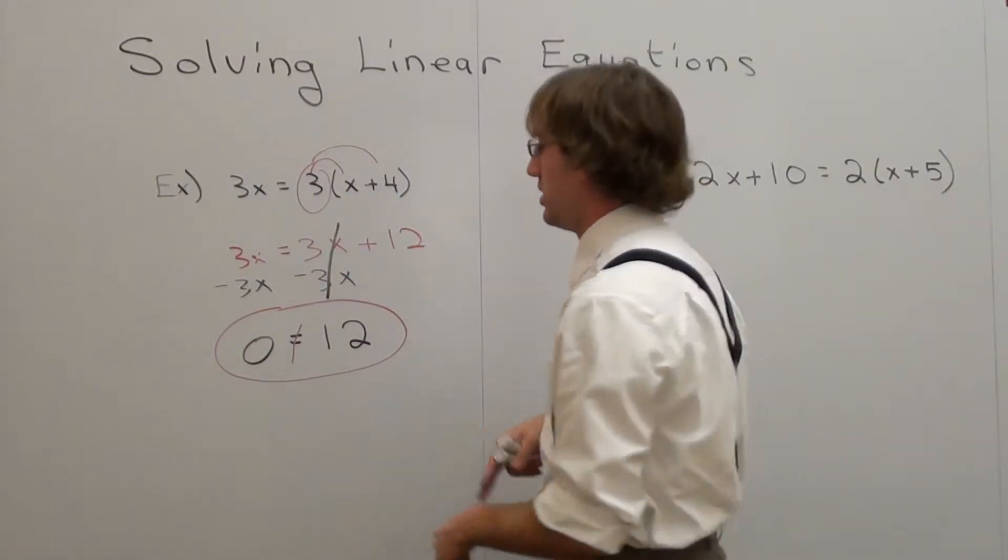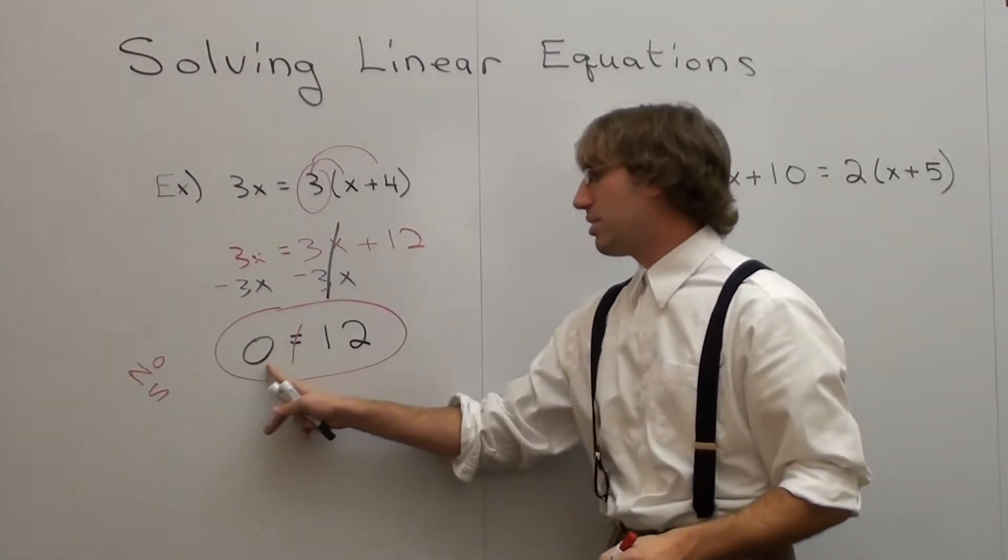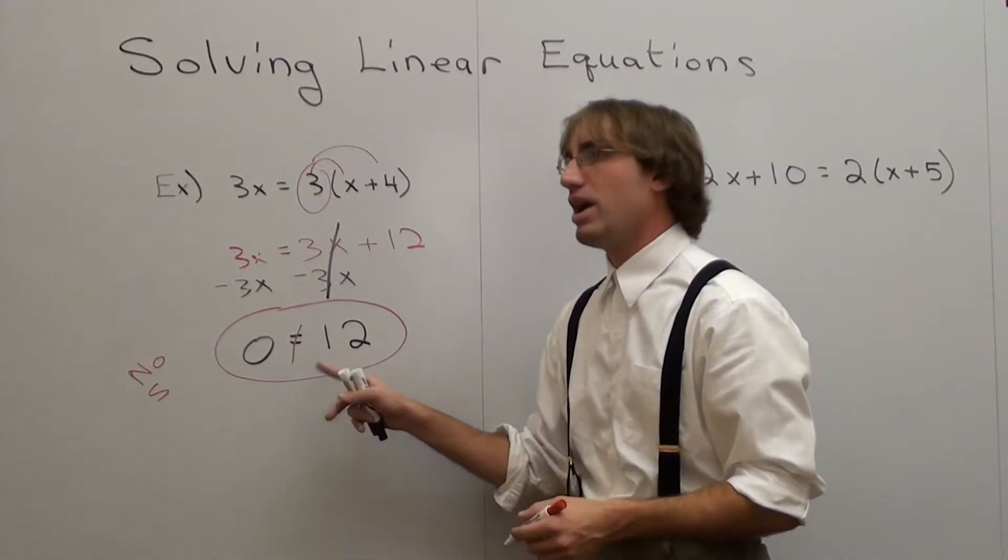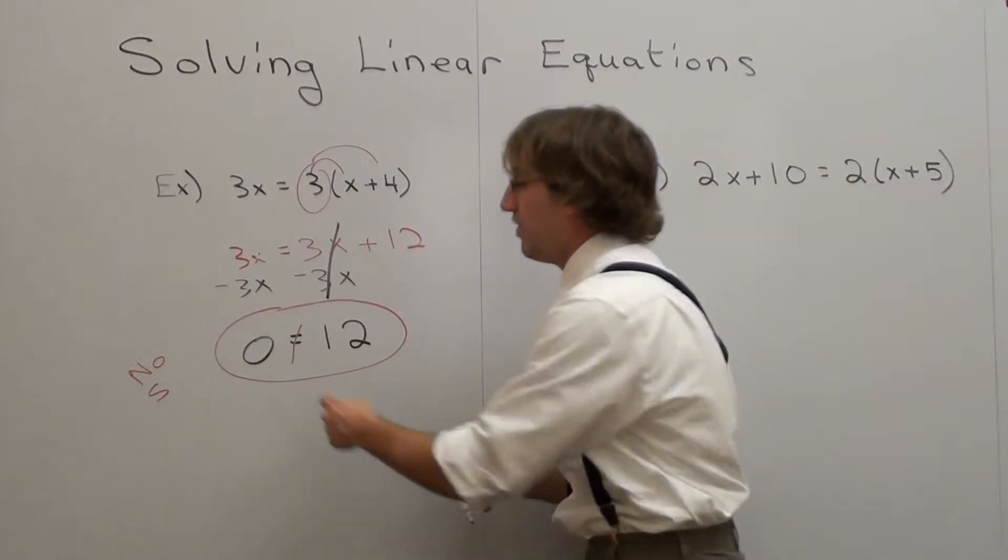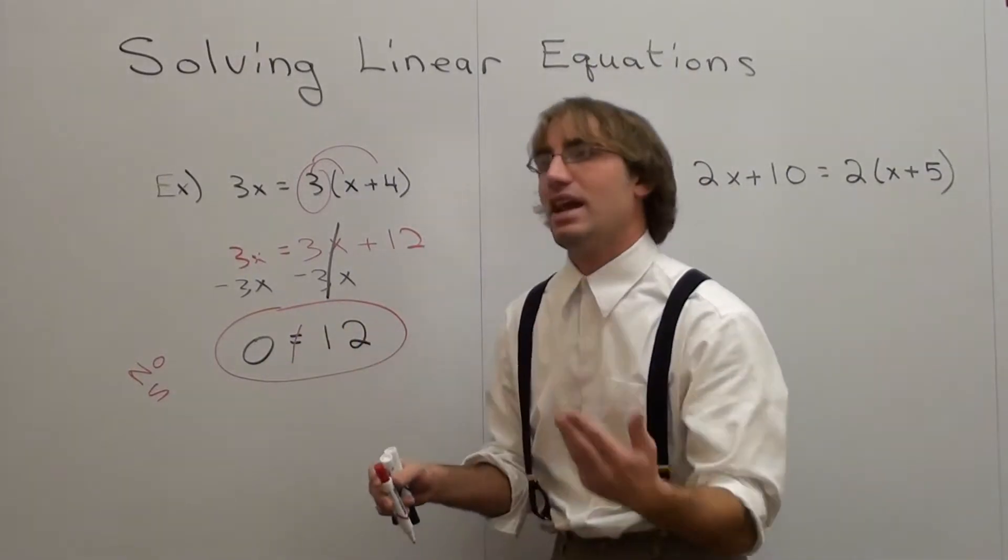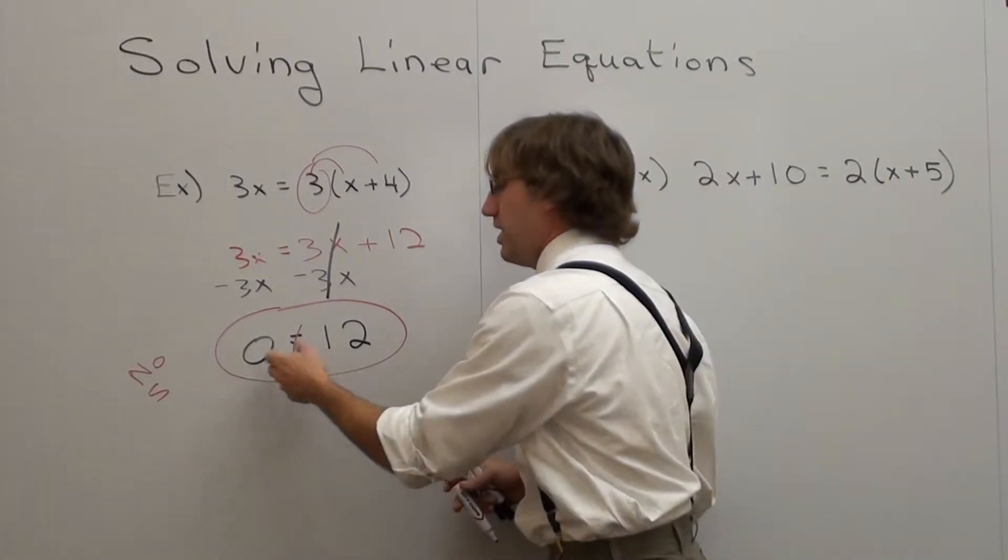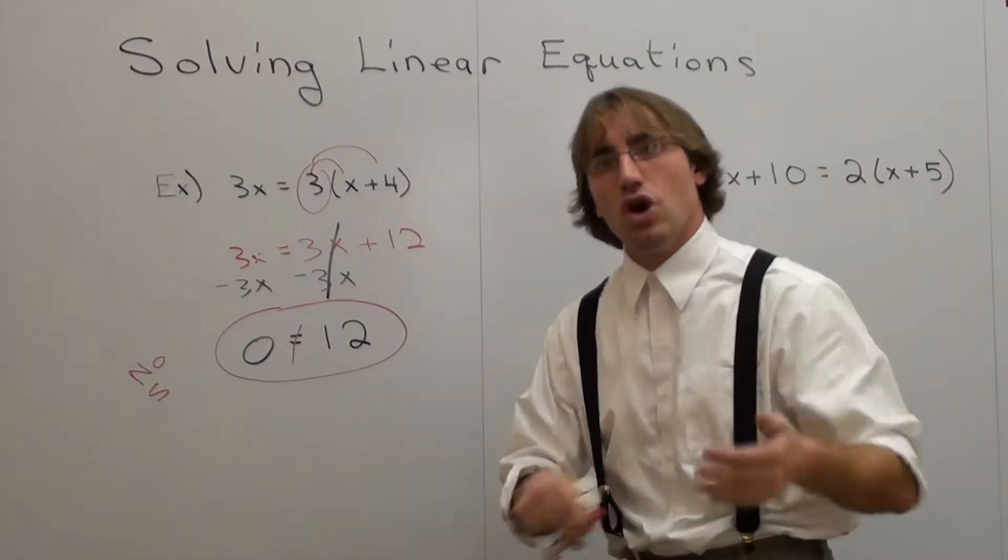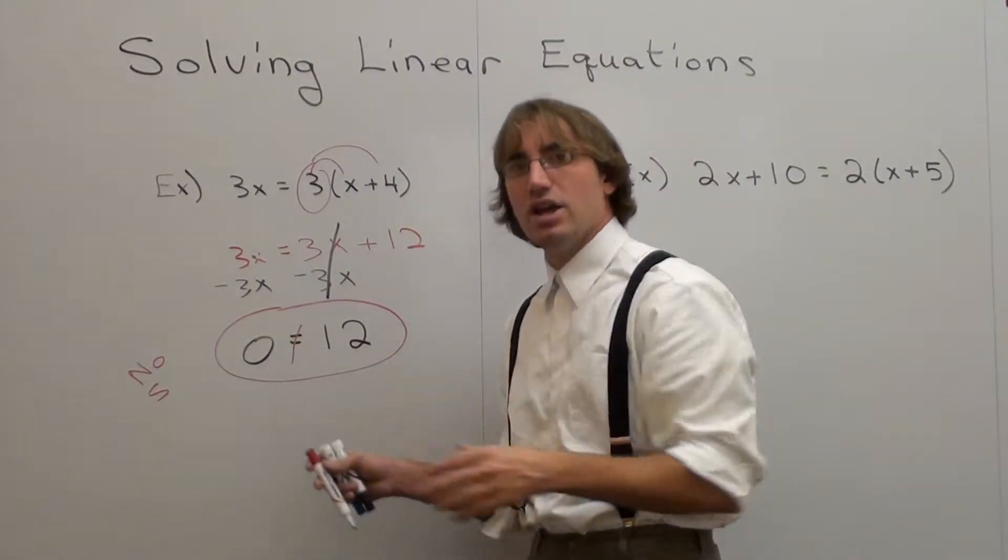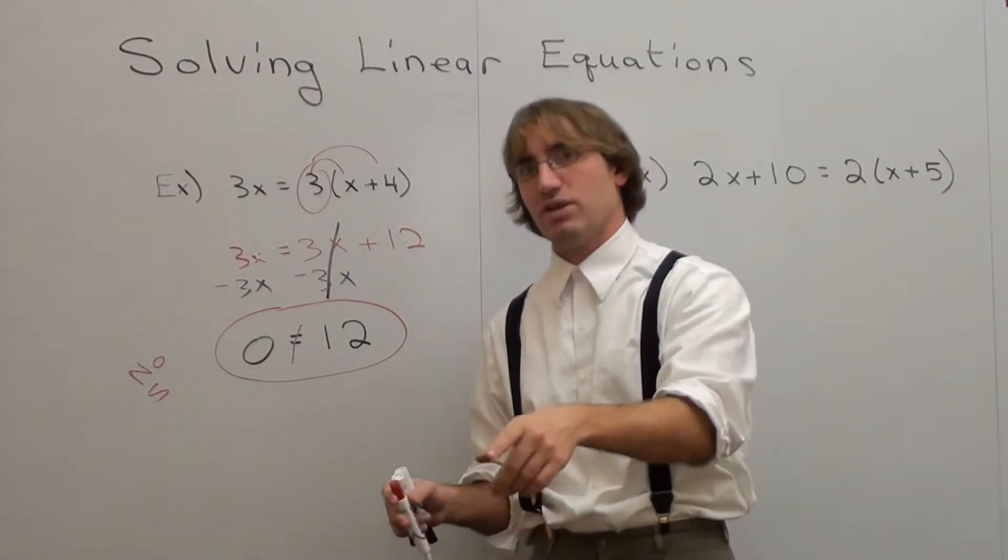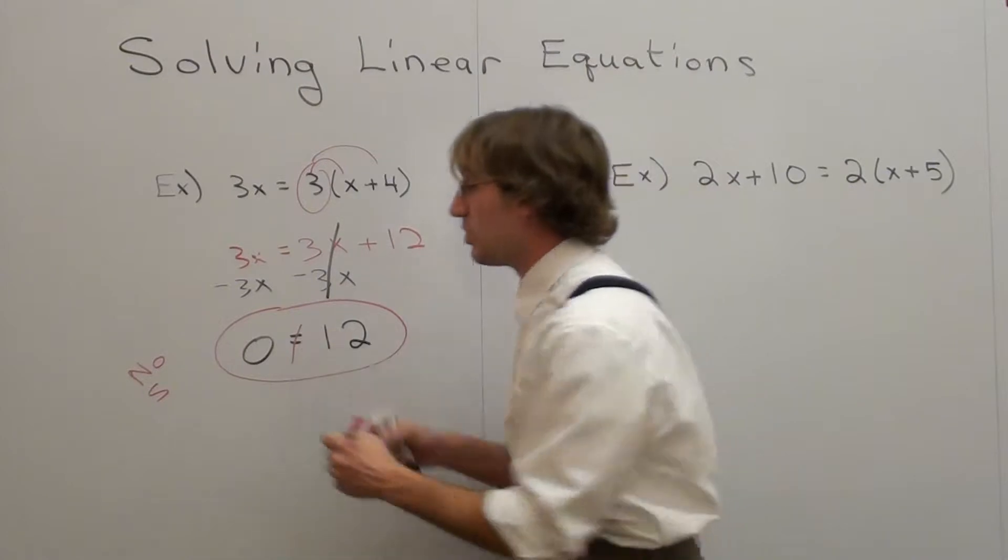Whenever you have a number equaling a number, and the numbers aren't the same, the answer is no solution. If you have 1 equals 8, that never works. The answer is no solution, or no real solutions. If you have negative 3 equaling 5, the answer is no real solutions. If you got rid of your x value and it's not equal to anything, there's no real solutions here. There's another case where the opposite is going to happen. But this one is no solution.